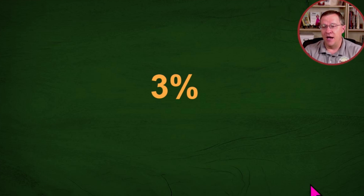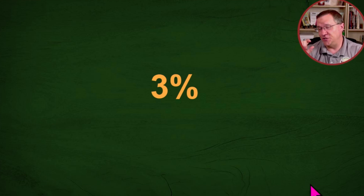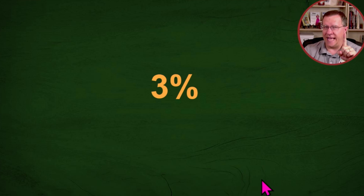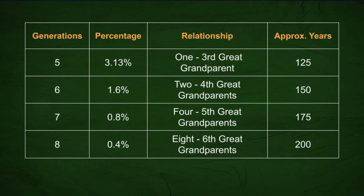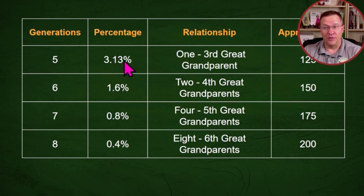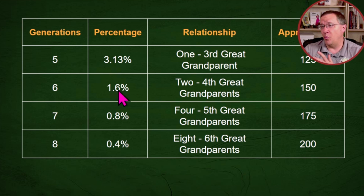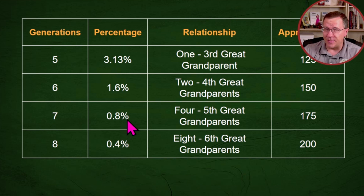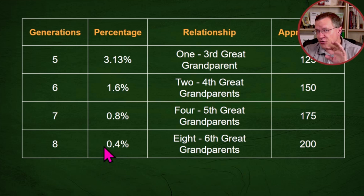Let's say you have three percent of some ethnicity not really represented anywhere else in your ancestry. With one ancestor, one third great grandparent equals about three percent. Go back another generation: two fourth great grandparents, each contributing about 1.6%, adds up to about three percent. Four fifth great grandparents at 0.8% each also totals about three percent. And eight sixth great grandparents at 0.4% each still adds up to three percent.